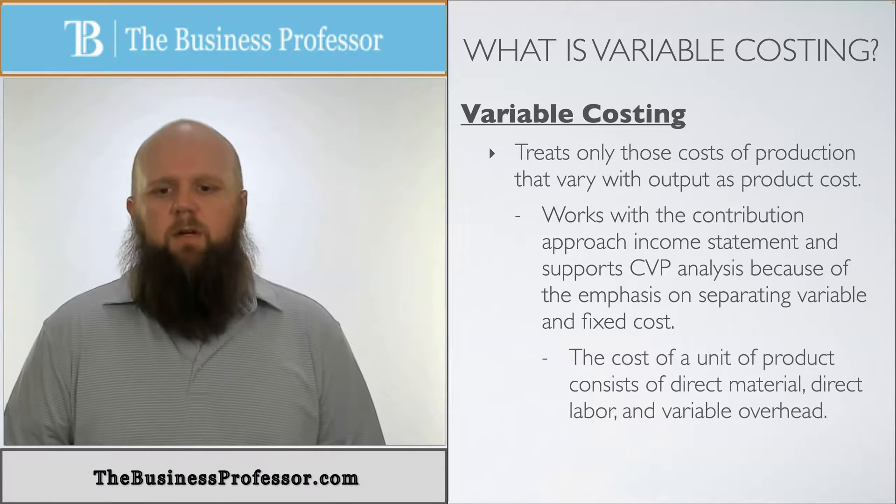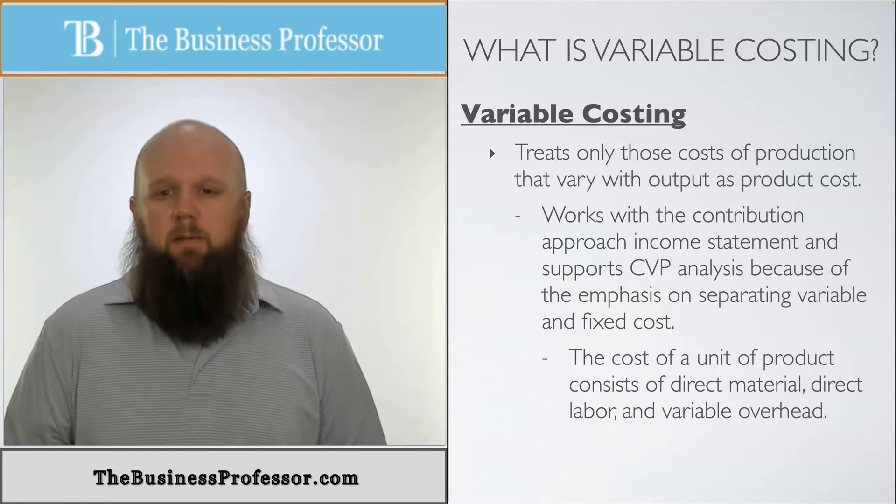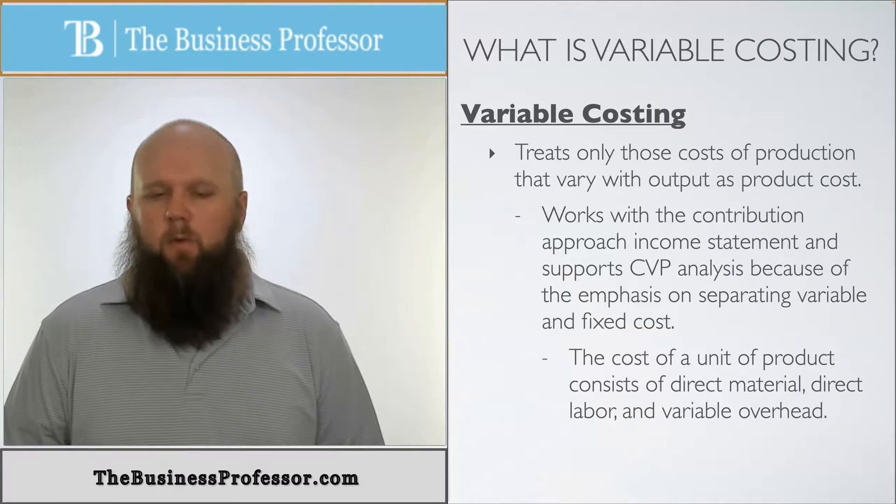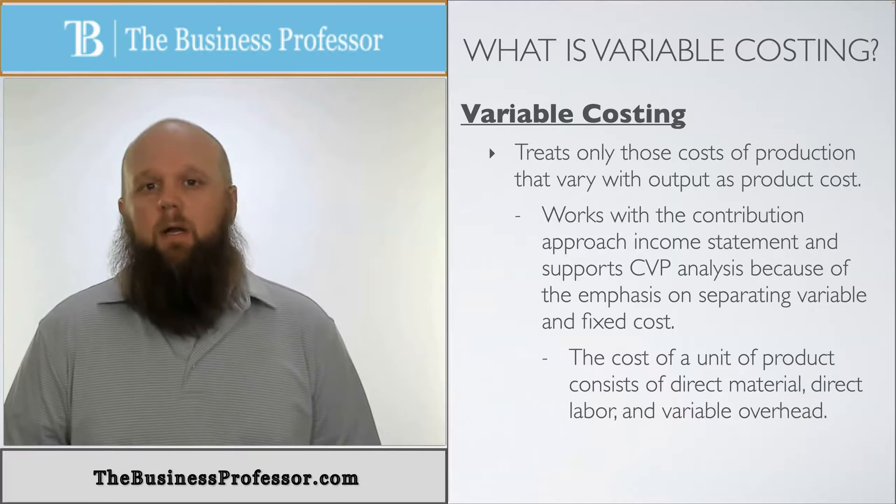The cost of a unit of product consists of direct material, that's variable, direct labor, that's variable, and only the variable overhead, not the fixed overhead. Remember we're only taking the variable stuff and that's it. That's what we're going to use in the product cost side.